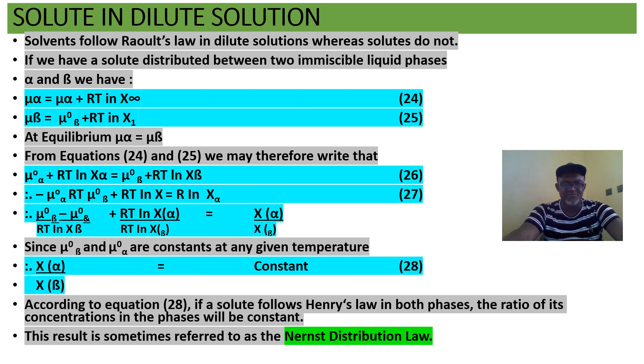And then we can solve and we'll have equation 28, which is a constant. That is, the distribution of x in phase alpha and in phase beta must be equal to a constant. And we call that Nernst distribution law, that is equation 28.